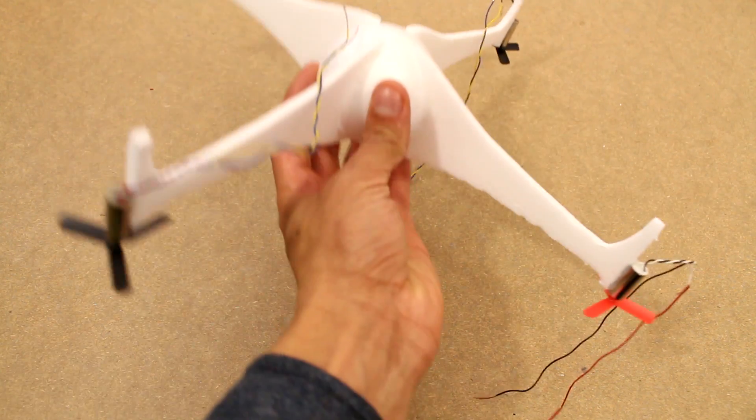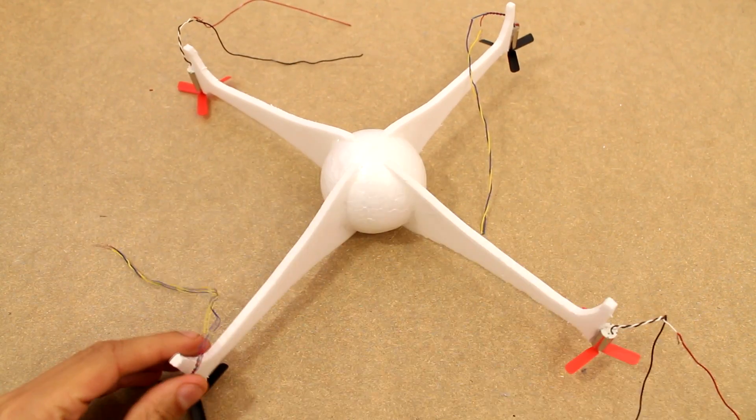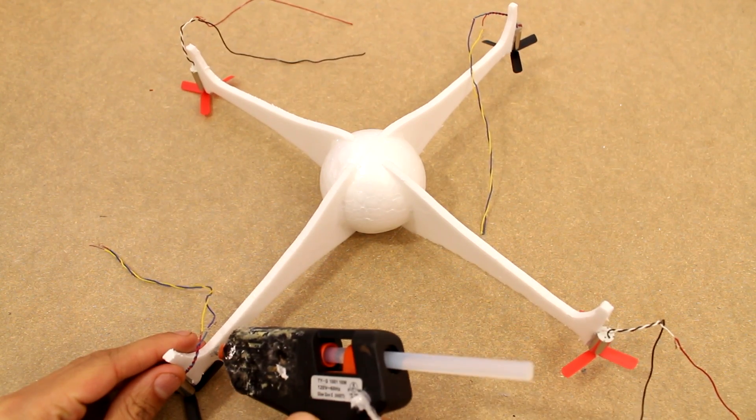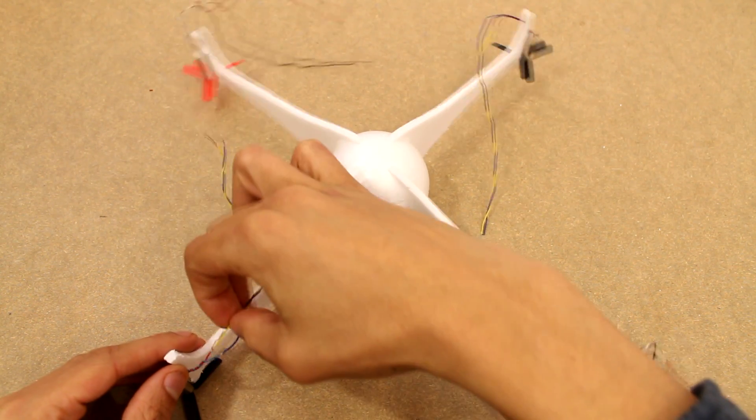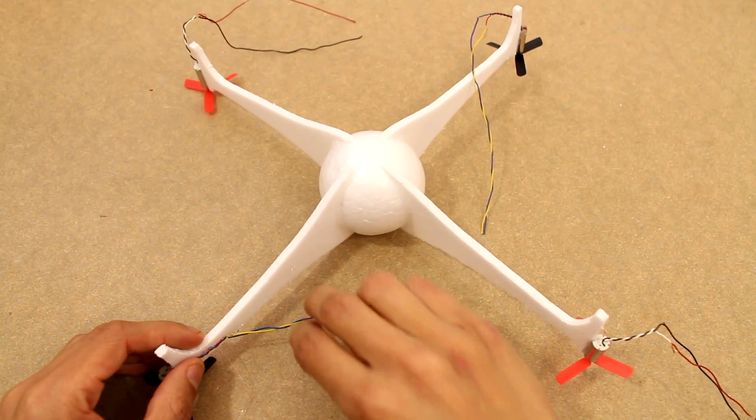The reason why we have them spin in opposite directions is so that the quadcopter doesn't end up twisting. The opposite directions cancel out any rotation. Now we're going to glue the wires down.